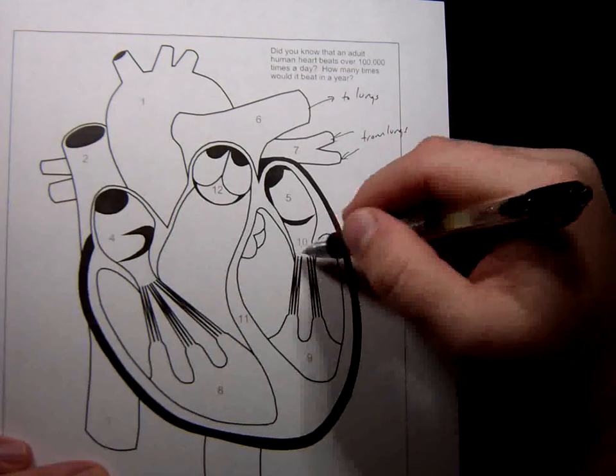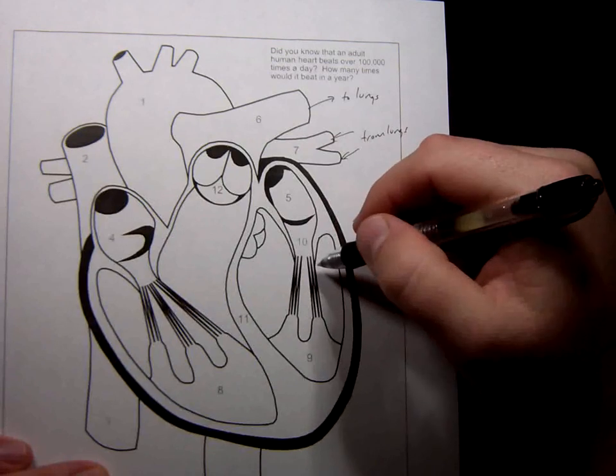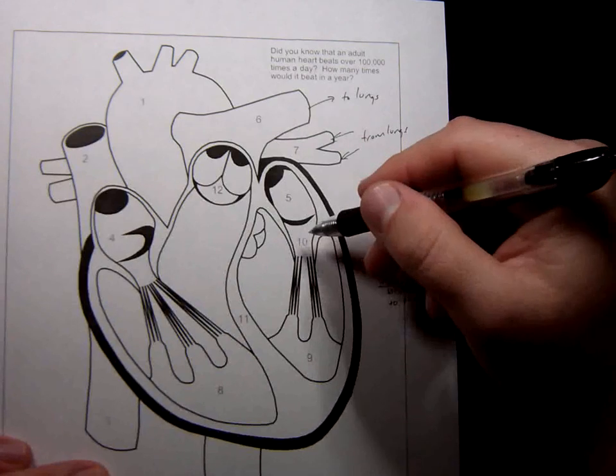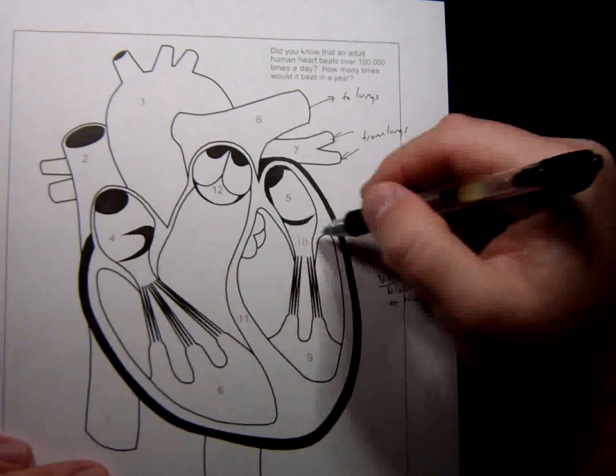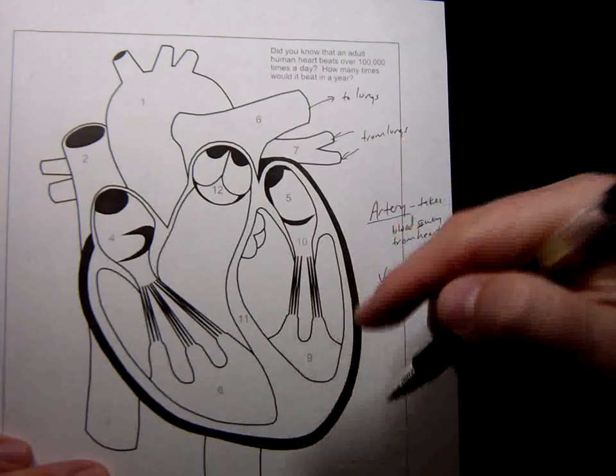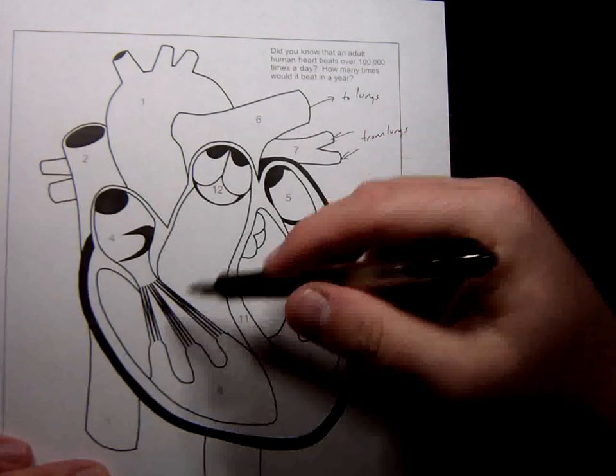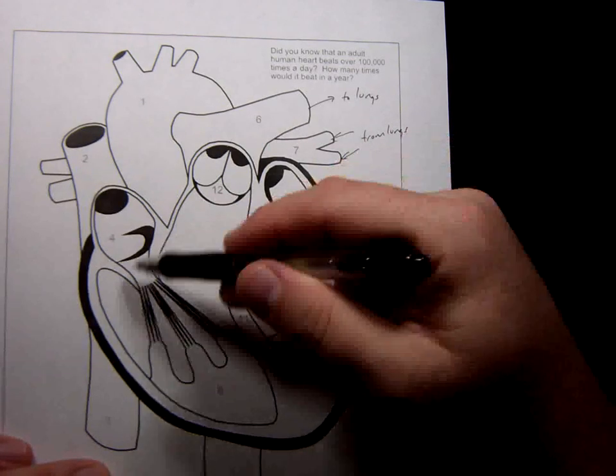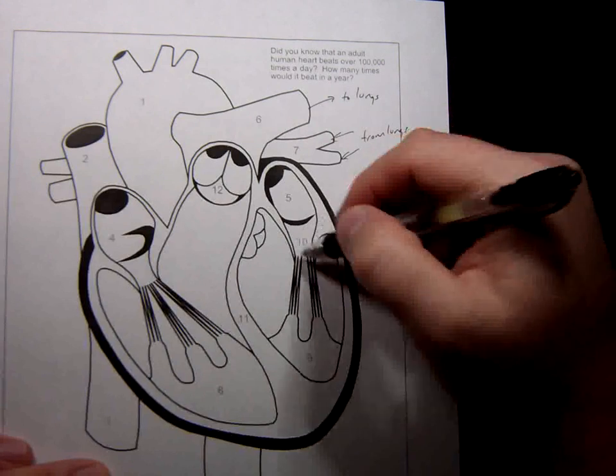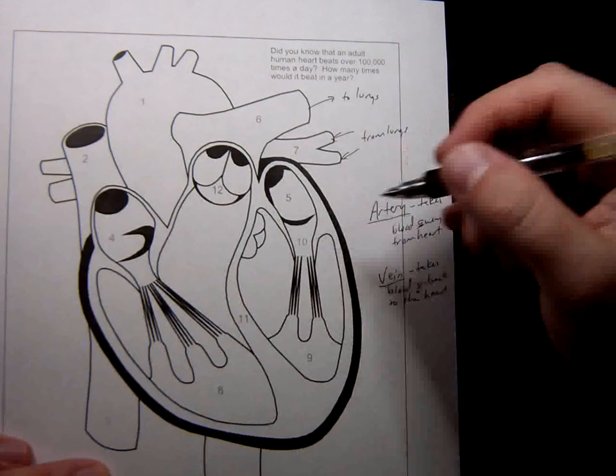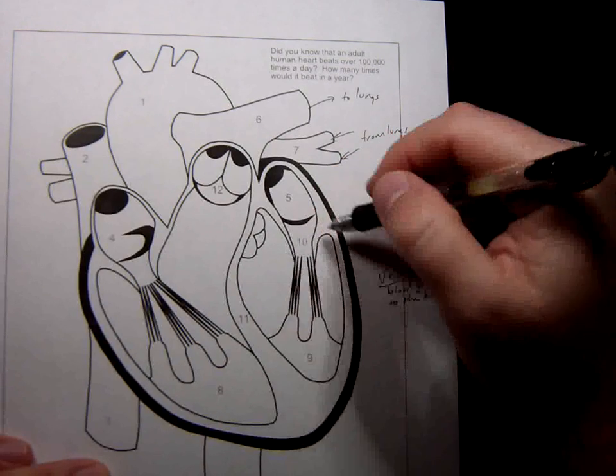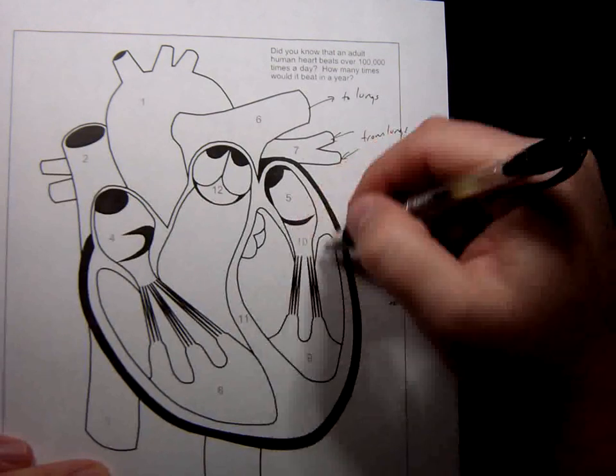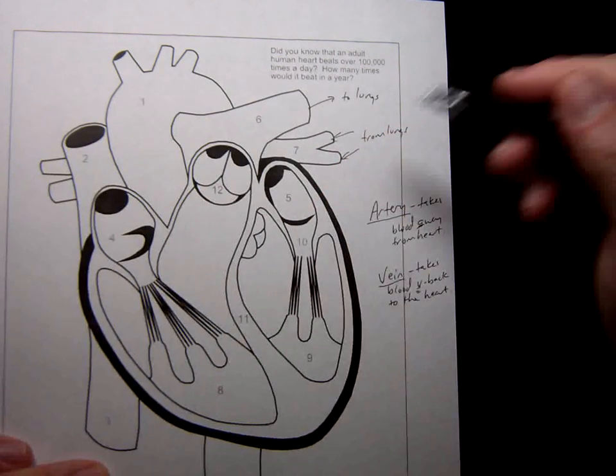These two valves here are sometimes called AV valves or sometimes called cuspid valves. How many cusps does this one have? Two. These little stringy things are called chordae tendineae. They're supposed to attach to the flaps. This valve only has two flaps, that's why it's called the bicuspid valve. How many does this one have? Three. And therefore it's called the tricuspid valve. This bicuspid valve is sometimes called the mitral valve as well. This is the one that generally has the most problems like mitral valve prolapse, and when people have to have heart valves replaced, it's generally this one that needs it done.